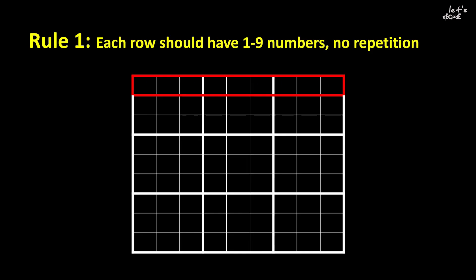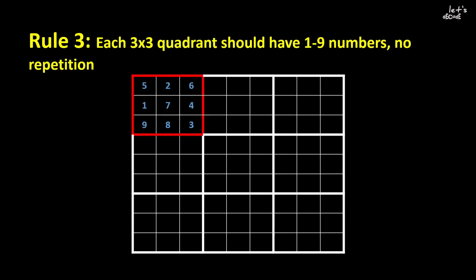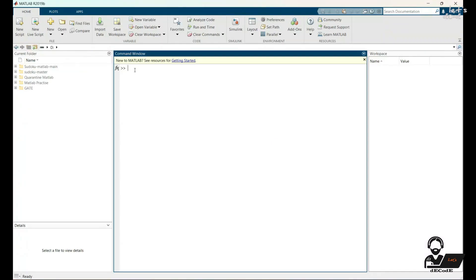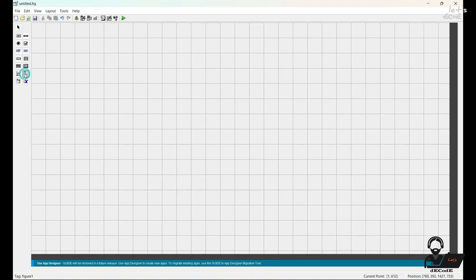This means that each number can only appear once in each row, and it can only appear once in each column as well. Finally, each number can only appear once in each 3x3 box. By applying these rules and techniques, you can solve any sudoku puzzle, no matter how difficult it may seem. Let's see a brief overview of how we can solve sudoku using MATLAB.